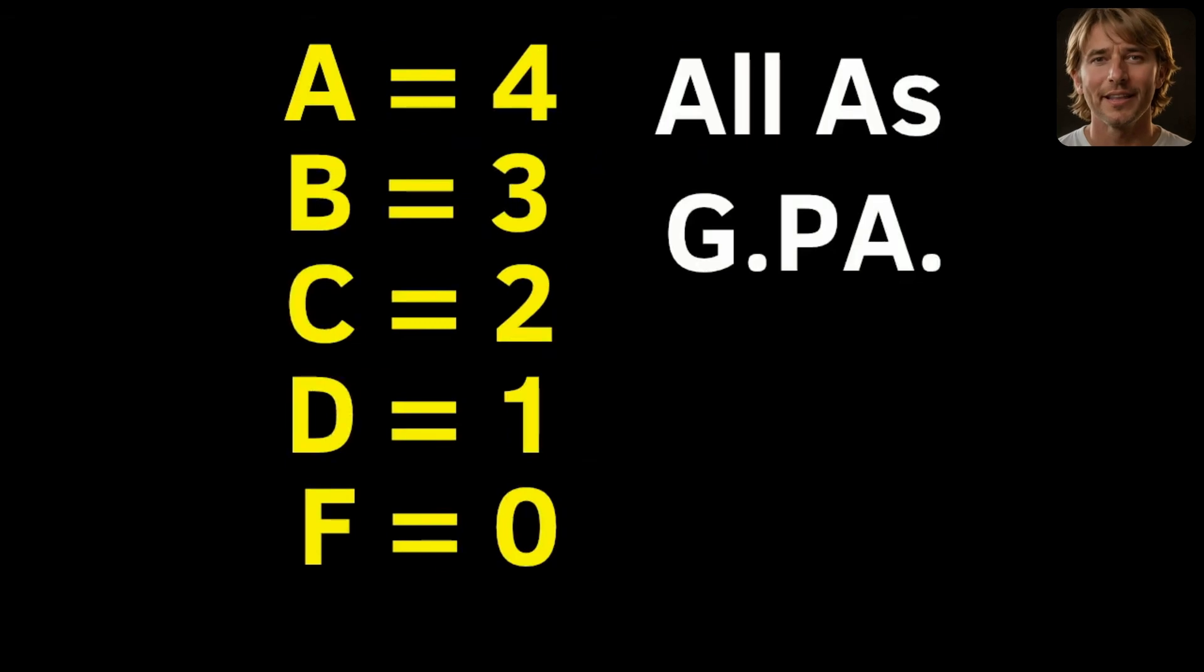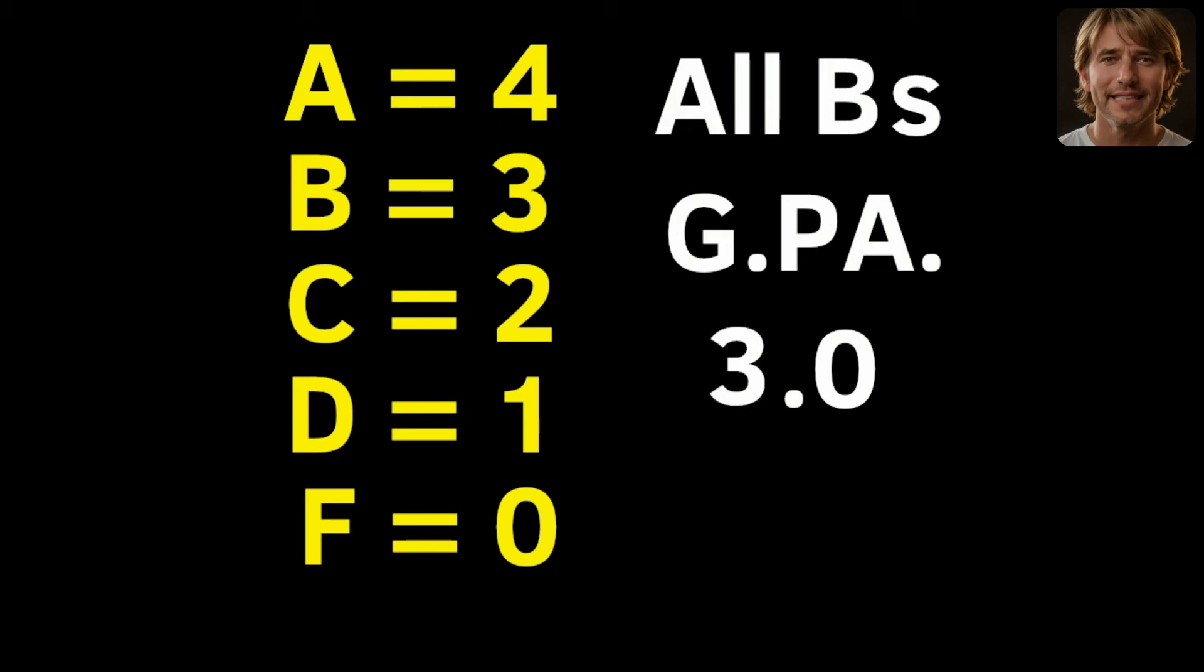If you earned all A's, your GPA would be a 4.0. That's called earning straight A's. If you earned straight B's, your GPA would be 3.0. Straight C's would be 2.0, straight D's would be 1.0, and straight F's would be a 0.0 grade point average.